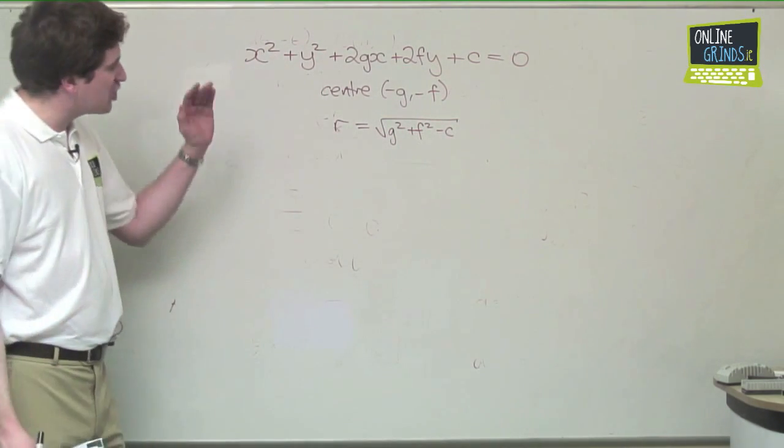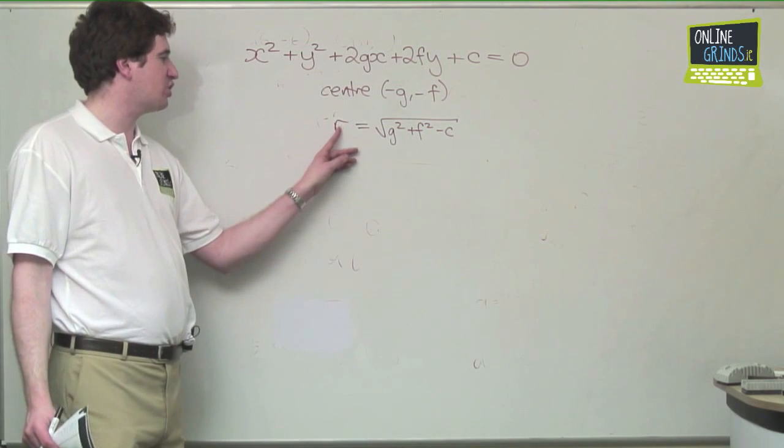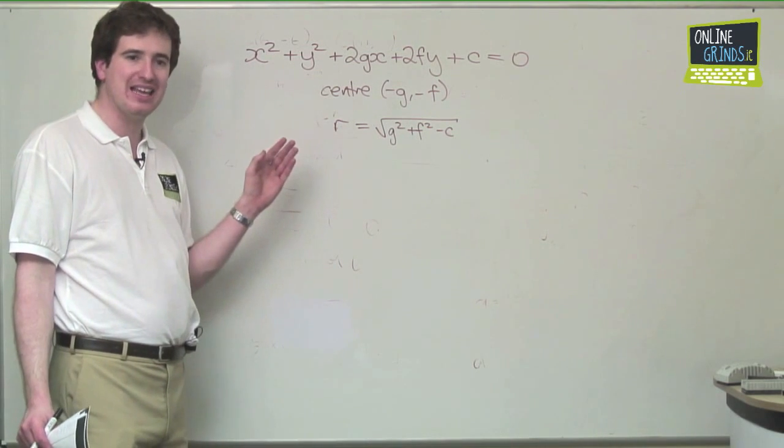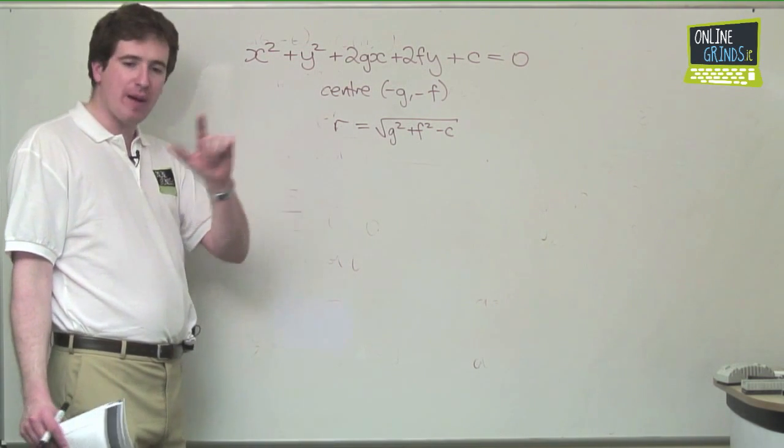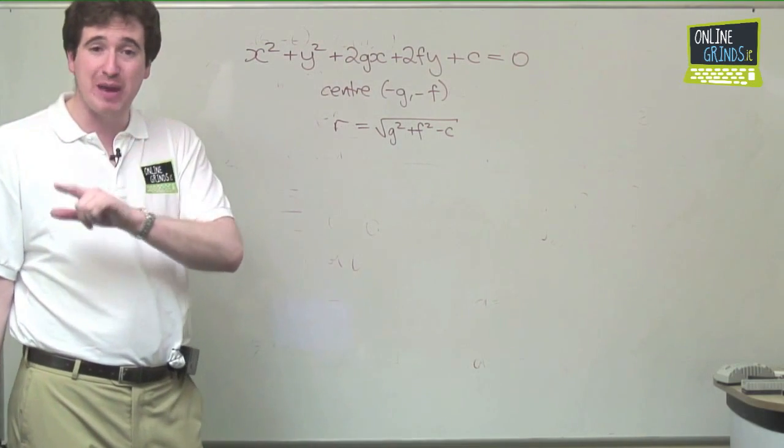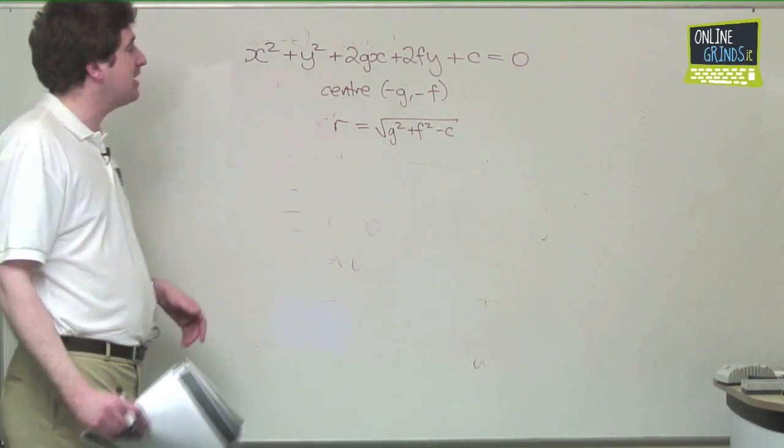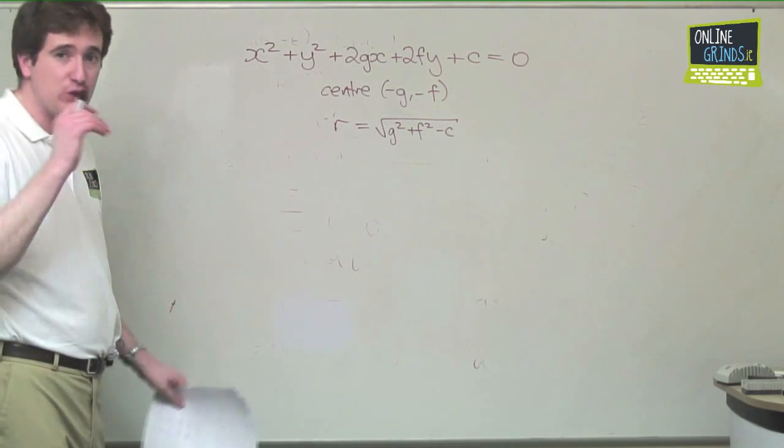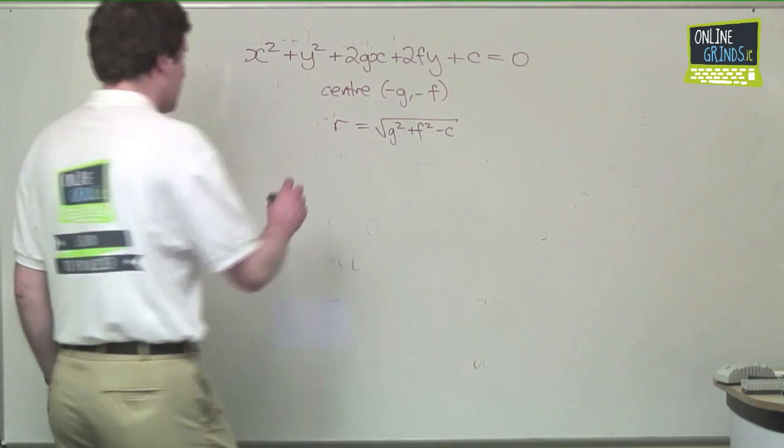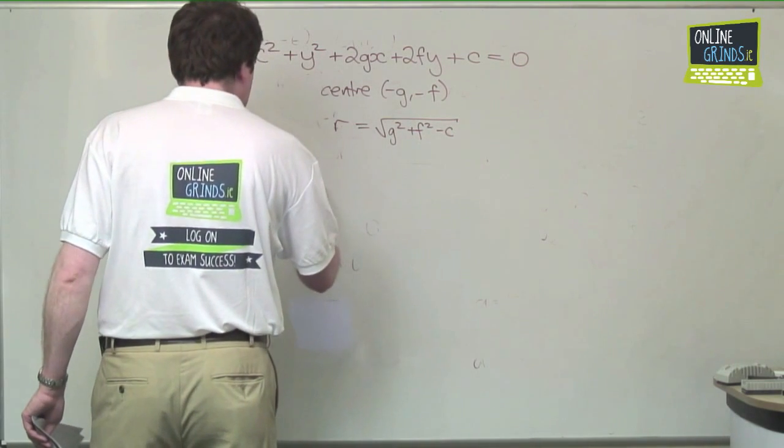In general that is the equation I run to when I'm in trouble in any problem involving the circle. But the problem that I've actually outlined there, the 2011 paper 2 question, is probably easier answered if you look at the alternative method for writing the equation of a circle.